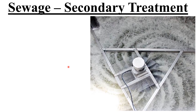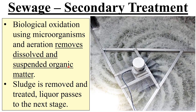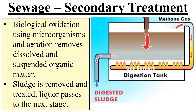Then we have secondary treatment. This is where you start to use microorganisms — this is called biological oxidation. What happens is you have microorganisms and aeration, which means oxygen is mixed in amongst the liquor. And what that does is it removes dissolved and suspended organic matter — basically the microorganisms naturally start to break it down. If there's any sludge remaining, it's also taken away. You can sometimes collect methane — we'll talk about that later.